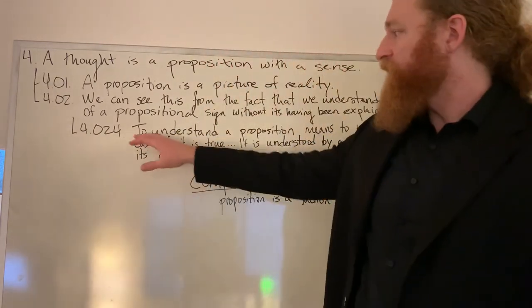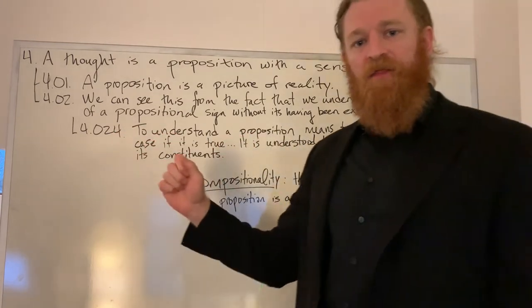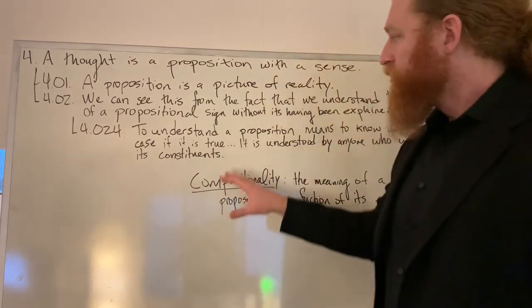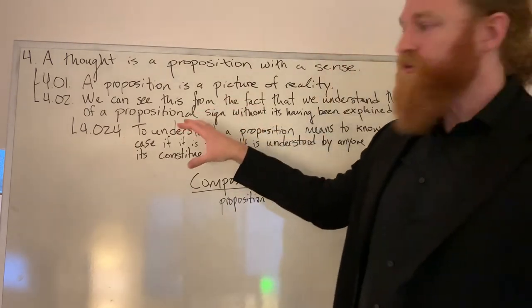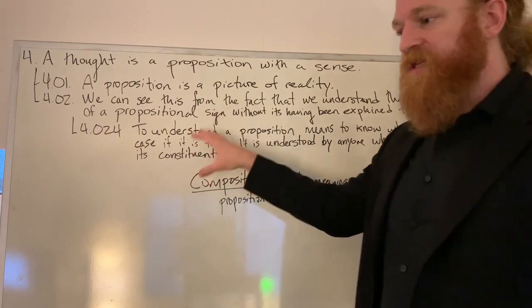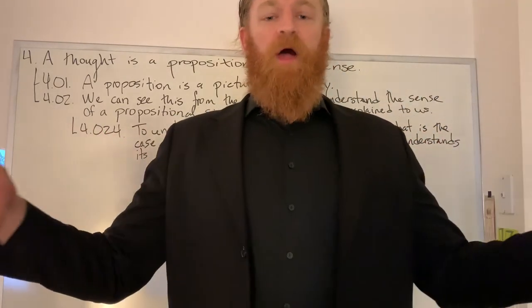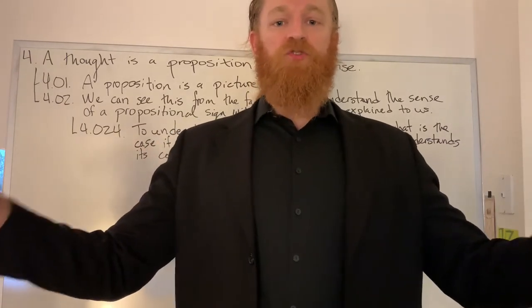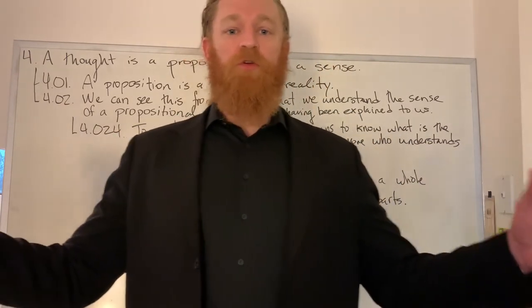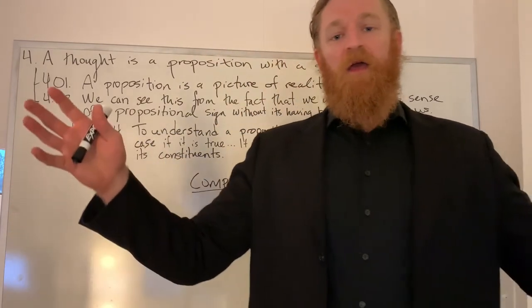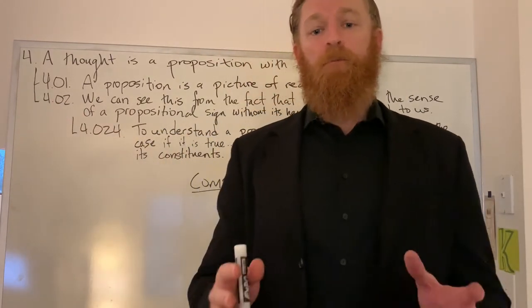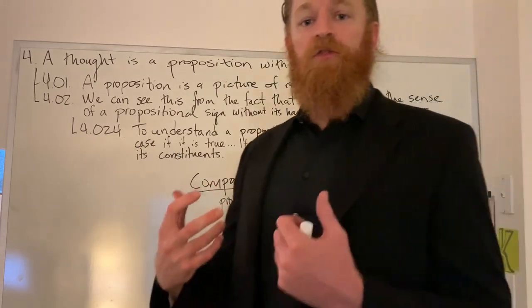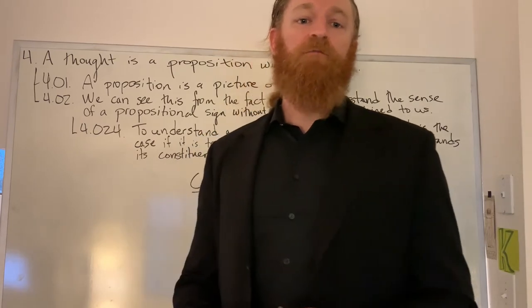The other component of 4.024, he's using his doctrine that the sense or the meaning of a proposition is just its truth conditions. So what 4.024 is driving towards is the idea that no matter how complex a proposition, its meaning is simply its truth conditions. And its truth conditions are given by the truth conditions of its simpler components put together in particular ways. This is Wittgenstein working towards the truth functional account of propositions.